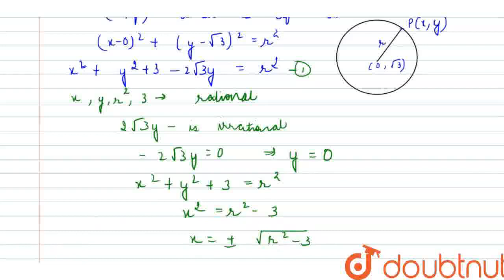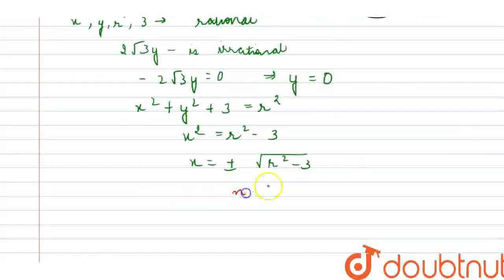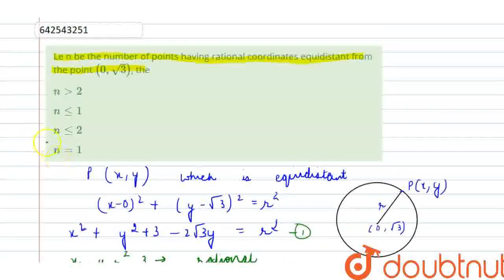So now, I get that n is less than or equal to 2. So which of the options is the correct option? n is less than or equal to 2. I hope it is clear. Thank you.